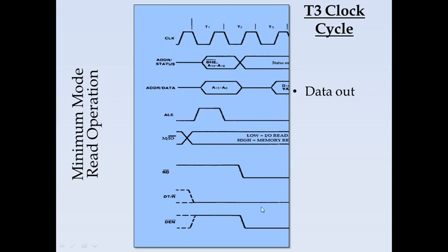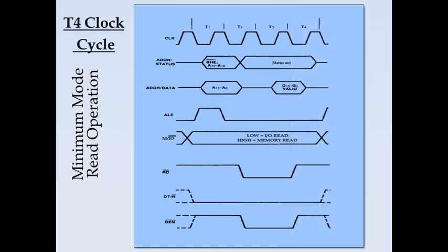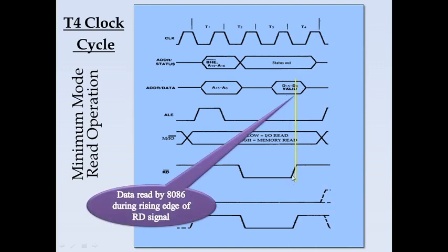The other signal states are maintained as during T3. During the T4 clock cycle, the data is read by the microprocessor on the rising edge of the READ signal, after which the other signals are removed. From T2 to T4, the data signal is driven on lines otherwise used for A16 to A19. This completes the minimum mode read operation.